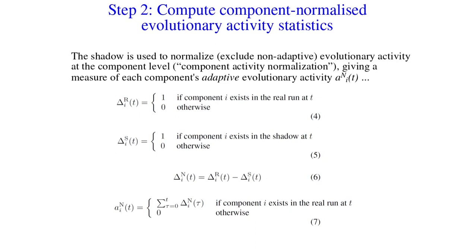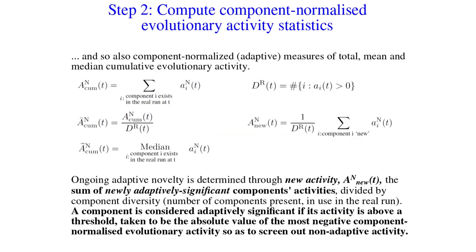The detail of this is really very simple. The shadow is used to normalise — that is, exclude non-adaptive evolutionary activity — at the component level, hence the name component activity normalisation, giving a measure of each component's adaptive evolutionary activity. We have a delta for the real system and a delta for the shadow system, each of which is one if a component exists in that system, otherwise zero. We subtract one from the other and add up over time to get our measure of adaptive activity for the component. We can also use these normalised component activities to calculate the component-normalised — that is, adaptive — measures of total, mean, and median evolutionary activity in the system.